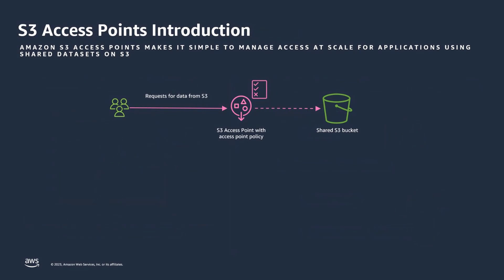Hence, to simplify access management for shared datasets, we introduce Amazon S3 Access Points. S3 Access Points allows customers to create multiple access configurations specific to their application use case. Now, instead of a single bucket policy, use S3 Access Points as endpoints to a bucket to govern access to the shared data.